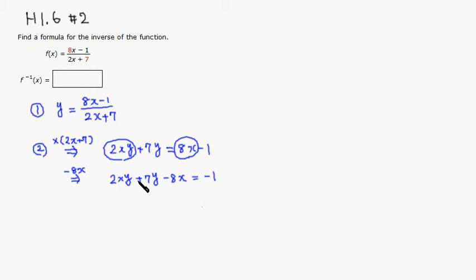Alright, now 7y doesn't have x in it, so we have to move over to the other side. So by subtracting 7y, we get, so 7y is gone, and we get 2xy minus 8x is equal to minus 7y minus 1, right?